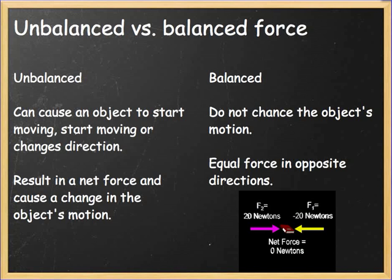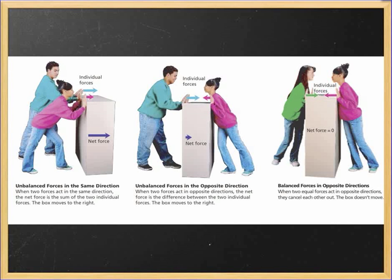When we have a balanced force, there's no change in the object's motion. They're equal and opposite, meaning that overall you end up getting zero. You've got 20 newtons acting one way and 20 newtons acting the other way — you get a total net force of zero. If forces are working together in the first picture, they're unbalanced in the same direction. They can be unbalanced in opposite directions, or you can have a balanced force where they are equal and opposite.